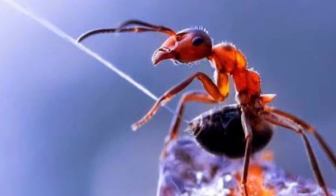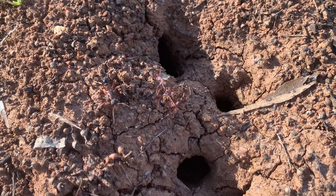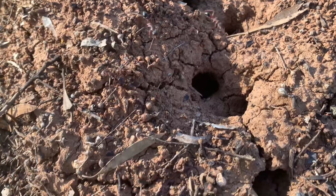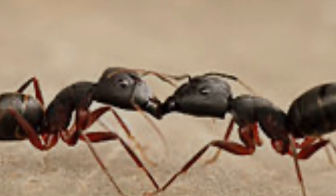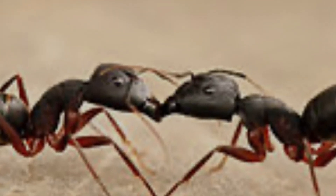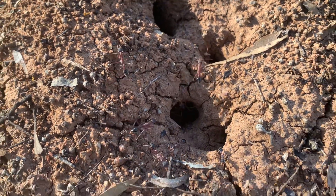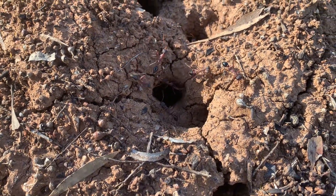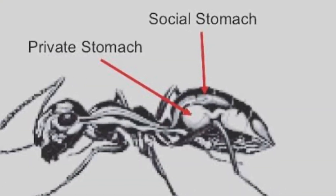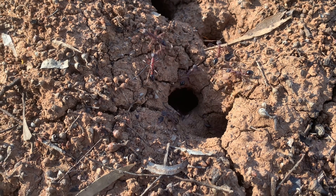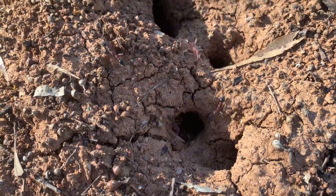Formic acid — this is the chemical produced by ants that is used as a defense mechanism to warn off threats. Trophallaxis — this is the process of ants transferring food through mouth-to-mouth to share the food. A social stomach — this is a secondary stomach that ants have where they store food to perform the trophallaxis.